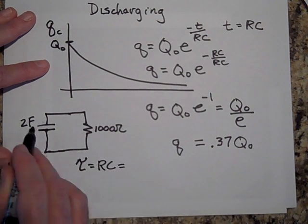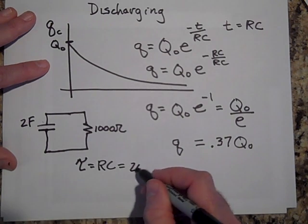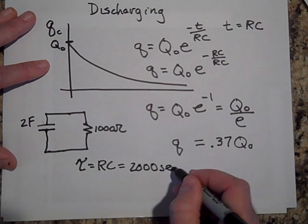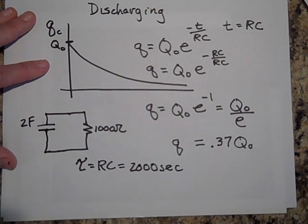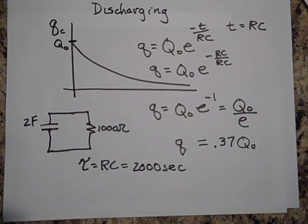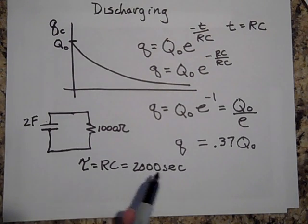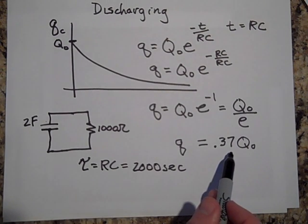Now look, the time constant is 2,000 seconds. So that means that if I know that, then I know that it's going to take 2,000 seconds to just get to a third of its original charge.